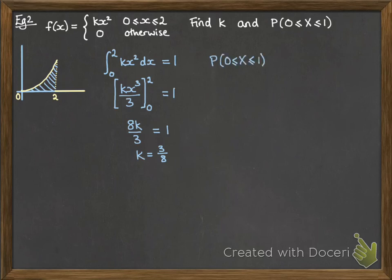Now that we've got k, we're working out the probability that x is between 0 and 1, which means we are finding the area under the curve between 0 and 1, which again is integrating. So integrating between 0 and 1, now that we know what k is, we pop it into our function, follow that integration through, and we get our answer of 1 eighth.